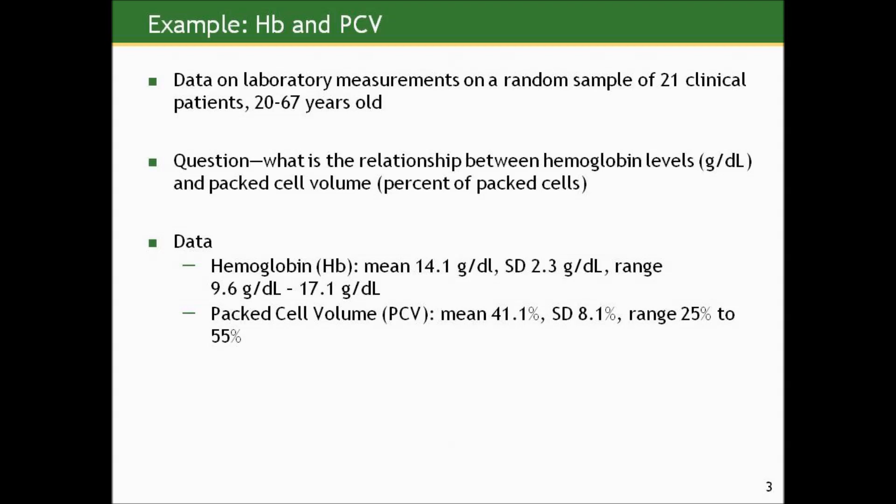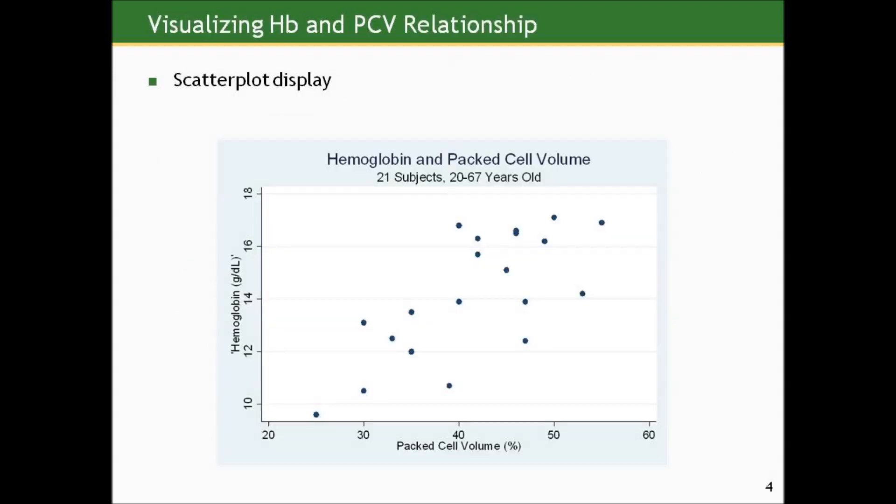The data on these 21 subjects shows a mean hemoglobin level of 14.1 grams per deciliter with a standard deviation of 2.3 and a range from 9.6 to 17.1. For packed cell volume, the mean is 41.1%, the standard deviation is about 8%, and the range is 25 to 55%.